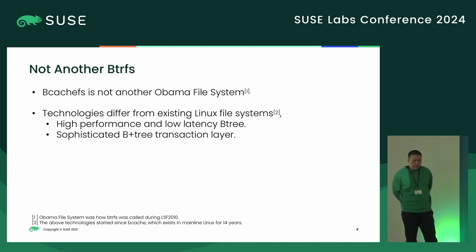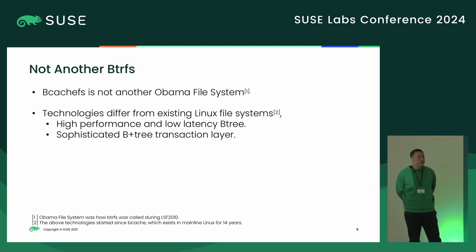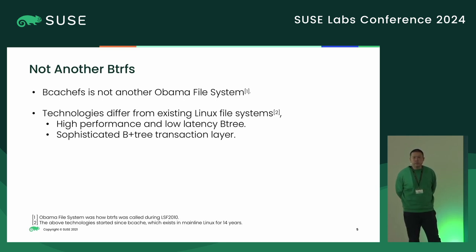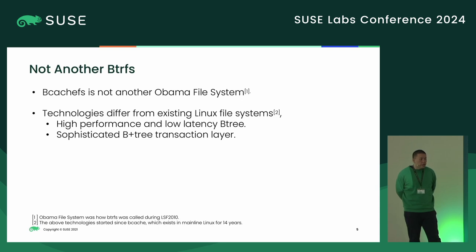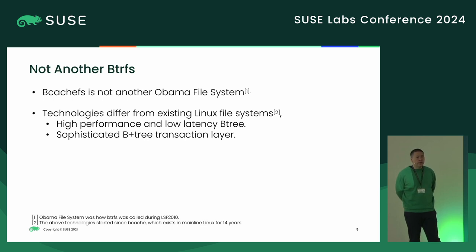Another distinct technology is the transaction layer. I mentioned that several years ago when I gave a talk for the Bcache journal. For BcacheFS, the data structure and algorithm is very similar, but there are four journals, not only one — with better design, including space reservation to avoid deadlock for the BcacheFS journal.